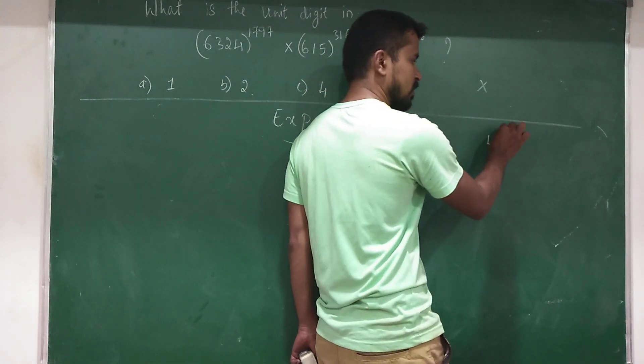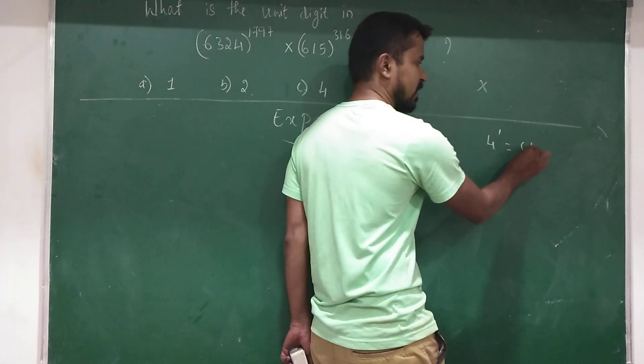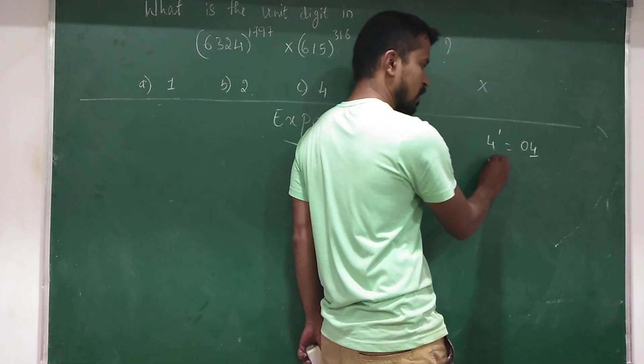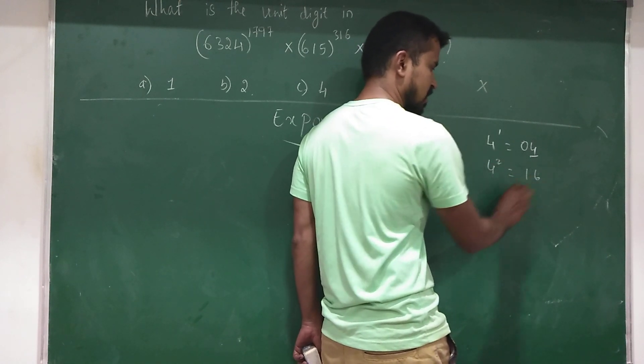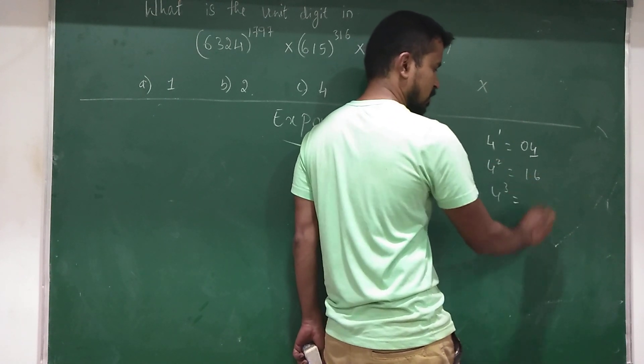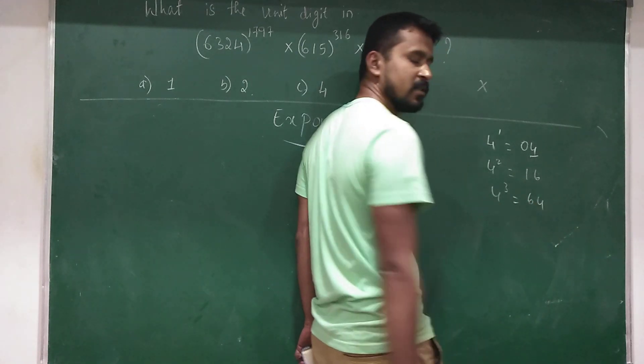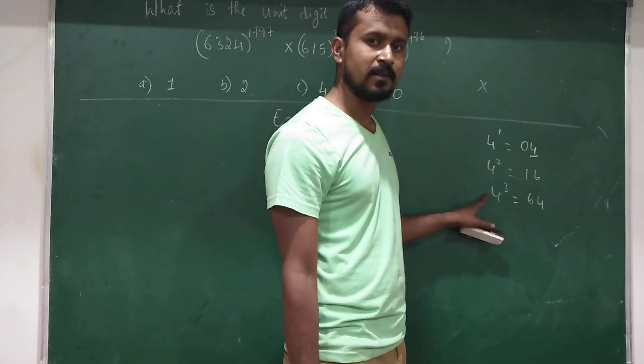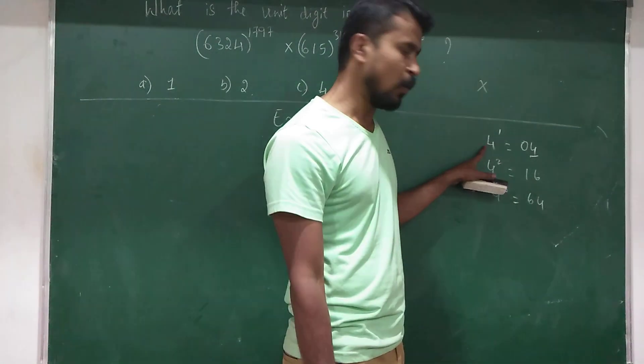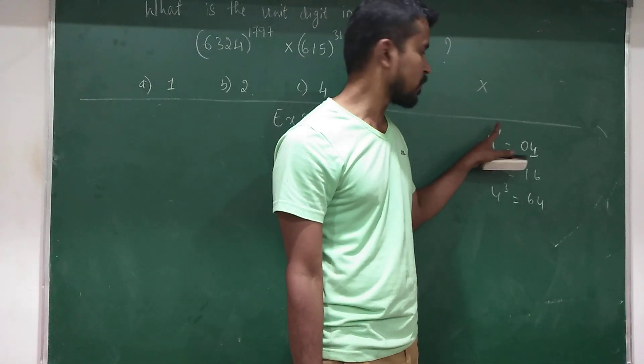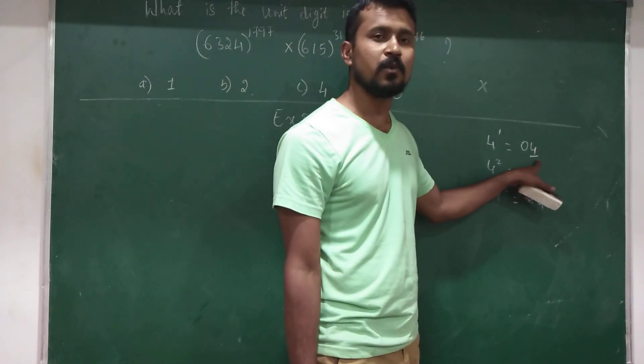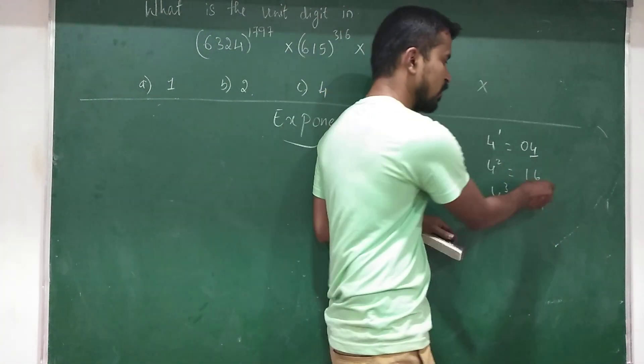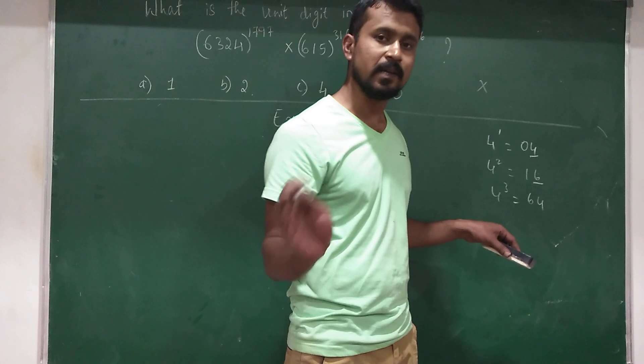4 to the power of 1 will be 4. I will write 4 to the power of 4. When you multiply, 4 to the power of any odd number, the unit digit will always be 4. 4 to the power of any even number, the unit digit will always be 6.